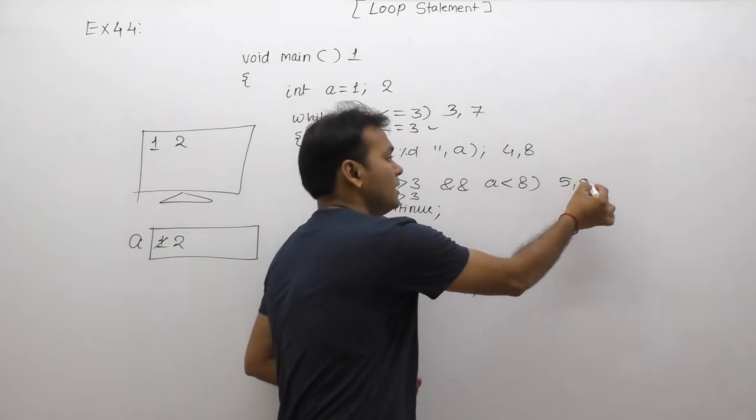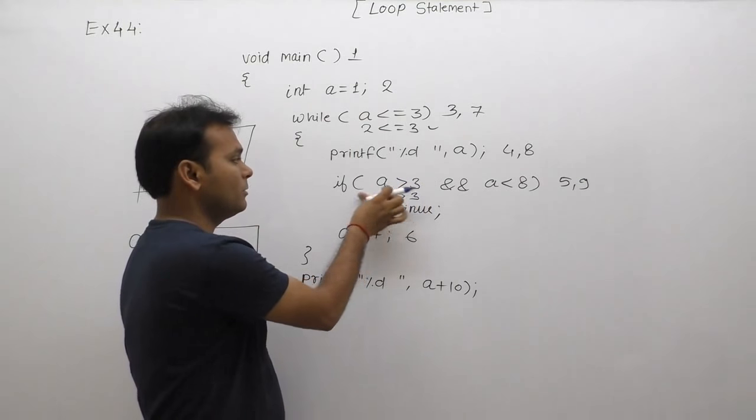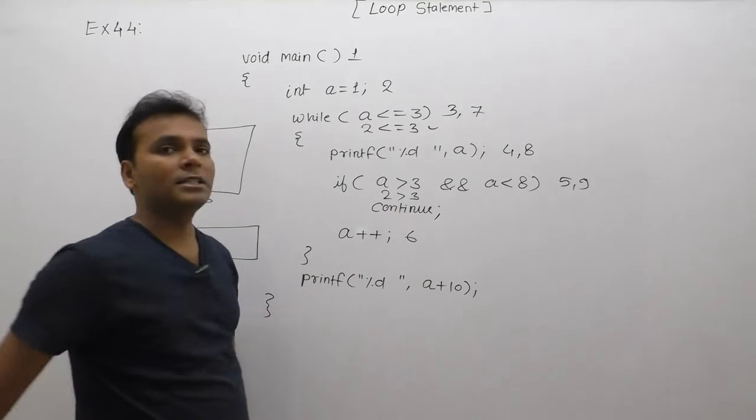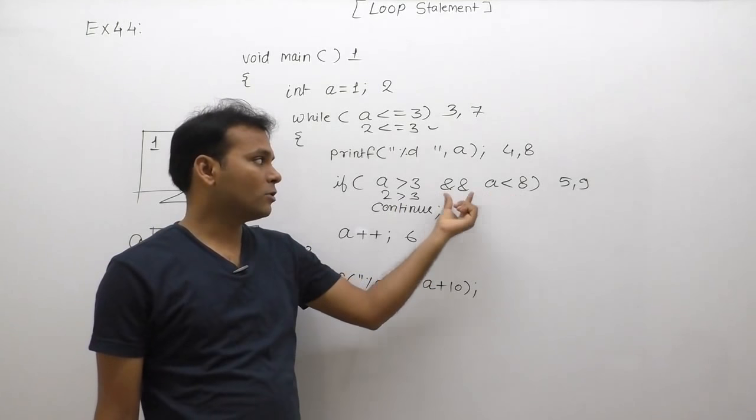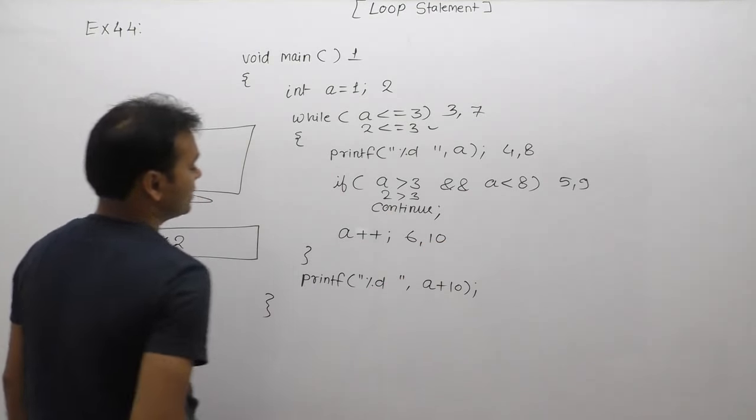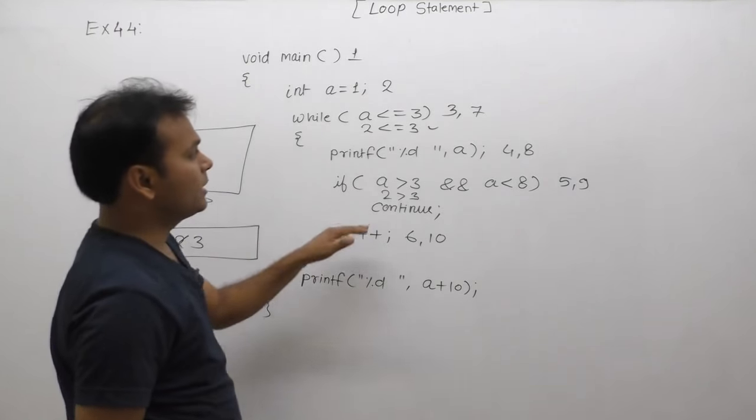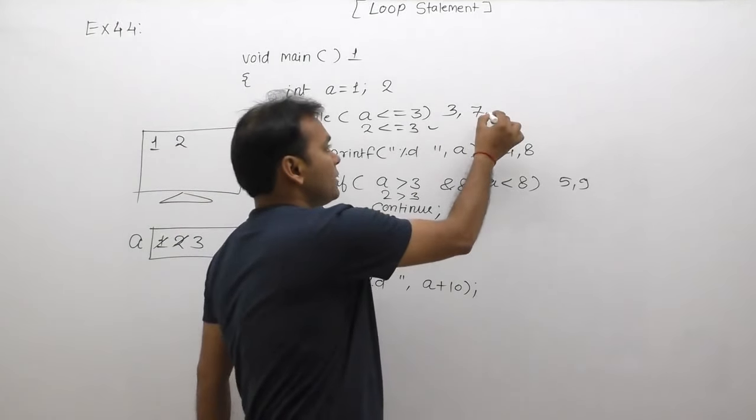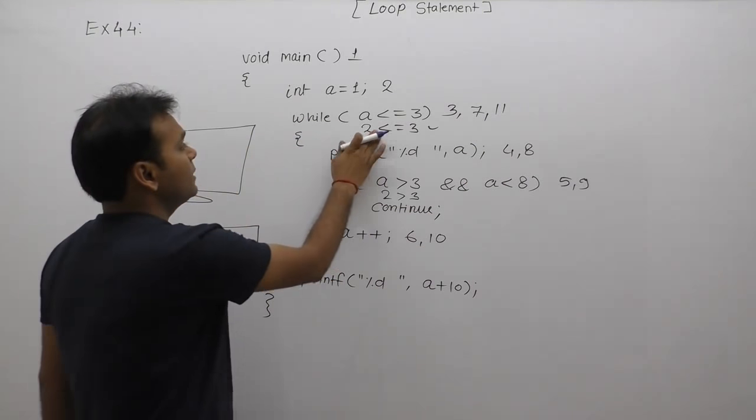Ninth case: again condition testing. We replace value of a is 2. Again condition is false. Second condition test cannot be done because of the AND operator. Next, tenth case: perform a plus plus. Value of a becomes 3. Control goes again to the condition of while.